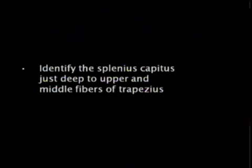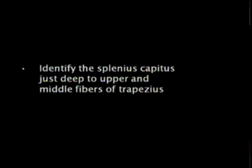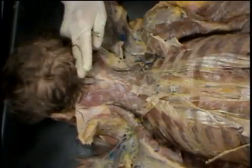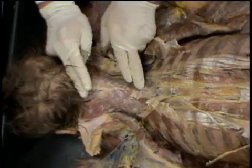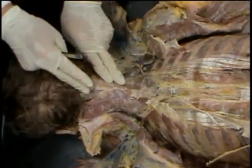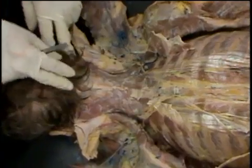In this next step, we're going to be identifying the splenius capitis muscle — splenius means bandage — and it's going to be just deep to the upper fibers of the trapezius. Up towards the base of the skull, we can see the splenius capitis running up towards either side towards the mastoid process, acting as a bandage. Splenius actually means bandage muscle.